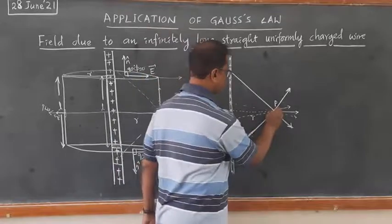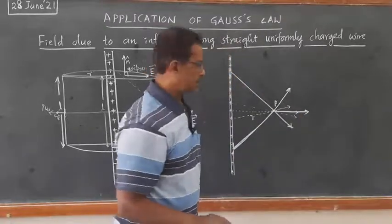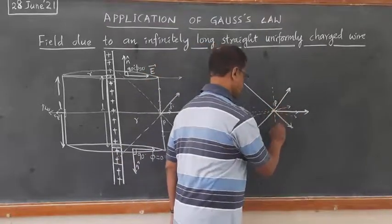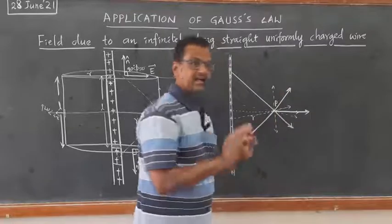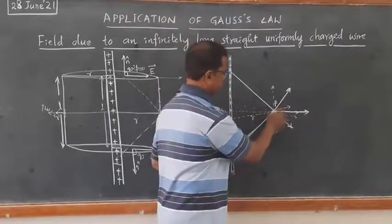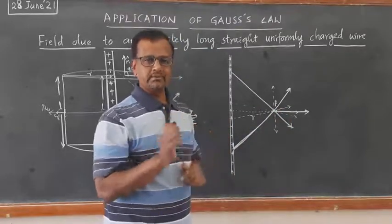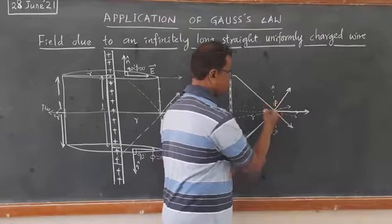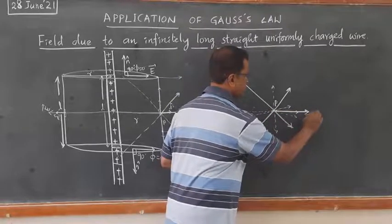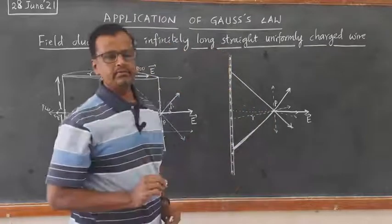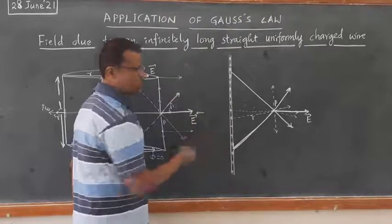The net electric field at this point will be acting only along the horizontal direction. The vertical components of the electric field cancel each other because they are in exact opposite directions. The horizontal components of the electric field add up to give a net electric field which is perpendicular to the wire. On the other side also, the electric field will always be perpendicular to the wire.